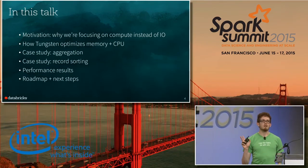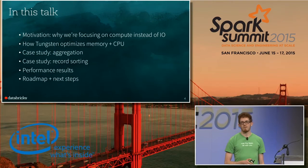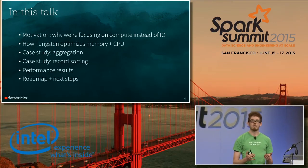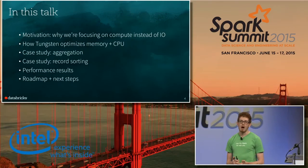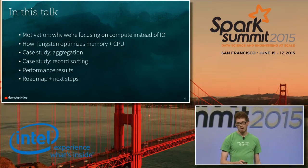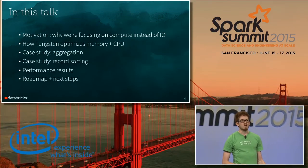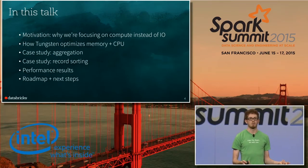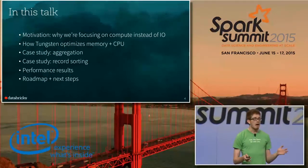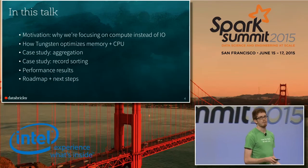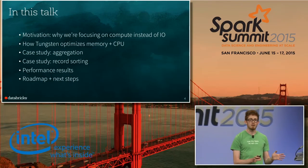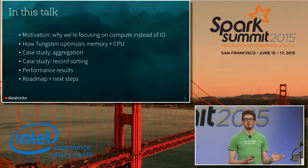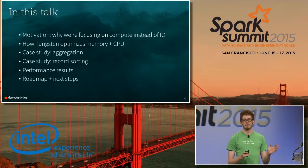We'll take a look at two case studies: how Tungsten optimizes aggregate and group-by queries in Spark SQL, and how we do optimized record sorting. I'll present some initial performance results showing how Project Tungsten can speed up real customer workloads, and then provide a roadmap showing which pieces of Tungsten are available today in Spark 1.4 and what we have planned for the next few releases.